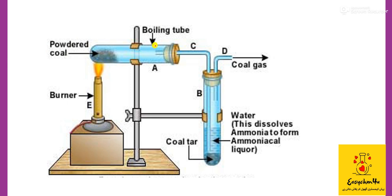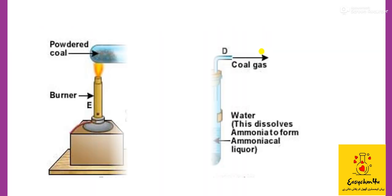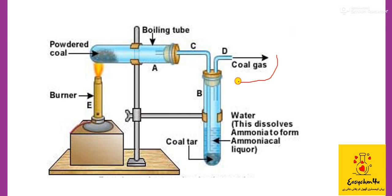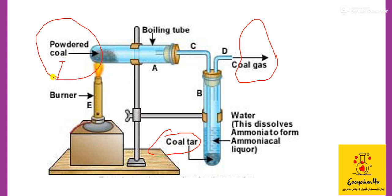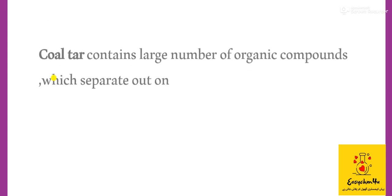The coal is placed in powdered form and heated at high temperature. Whatever coal gases are produced will be removed from here. The fractions are further absorbed in water and a viscous liquid is formed — that is called coal tar. Whatever residue is left behind after the coal burning at high temperature — after coal gas is removed and coal tar is formed — the residue left behind is called coke.